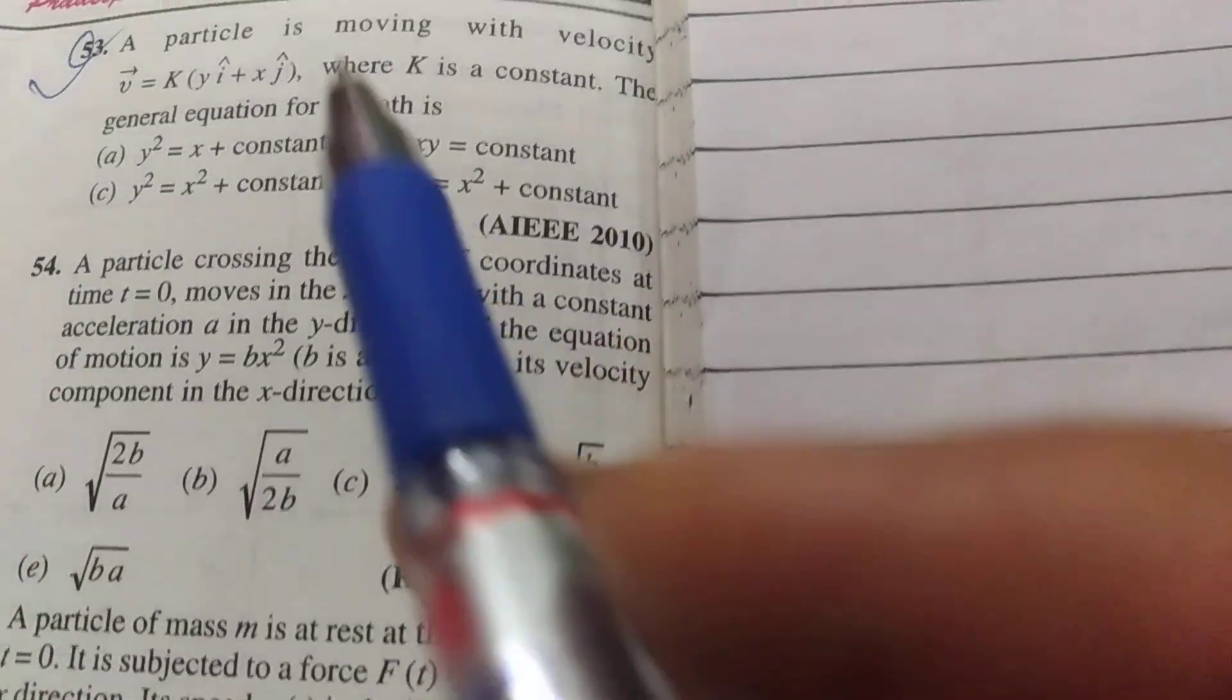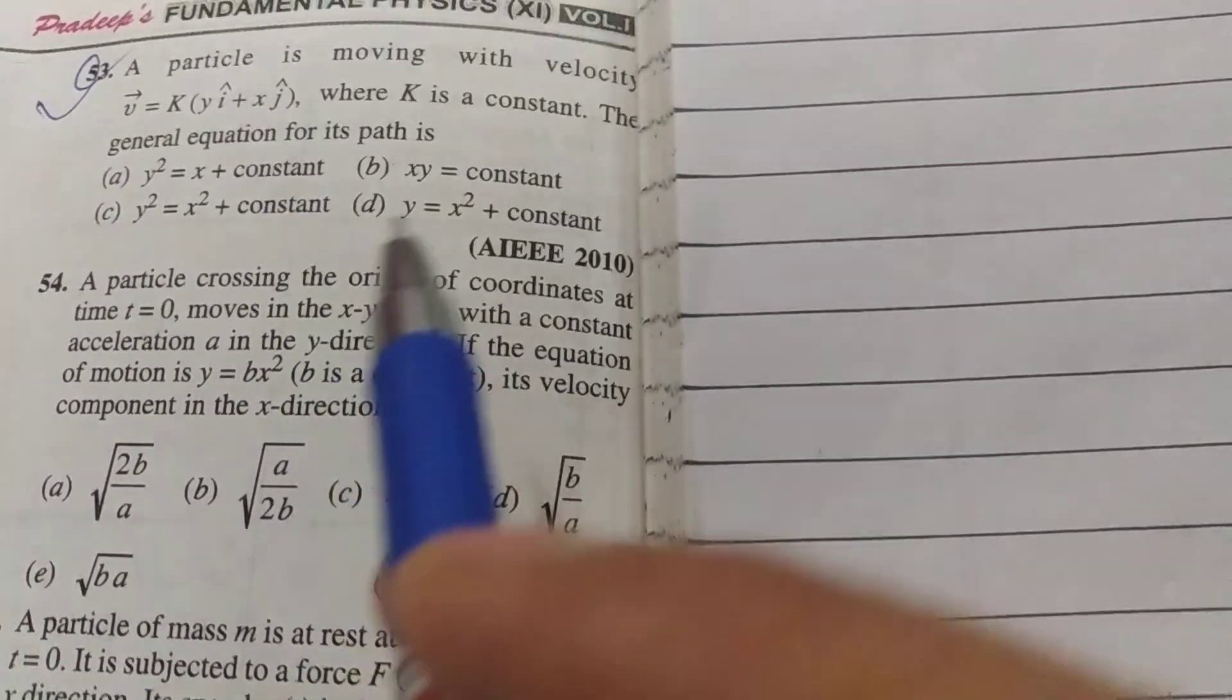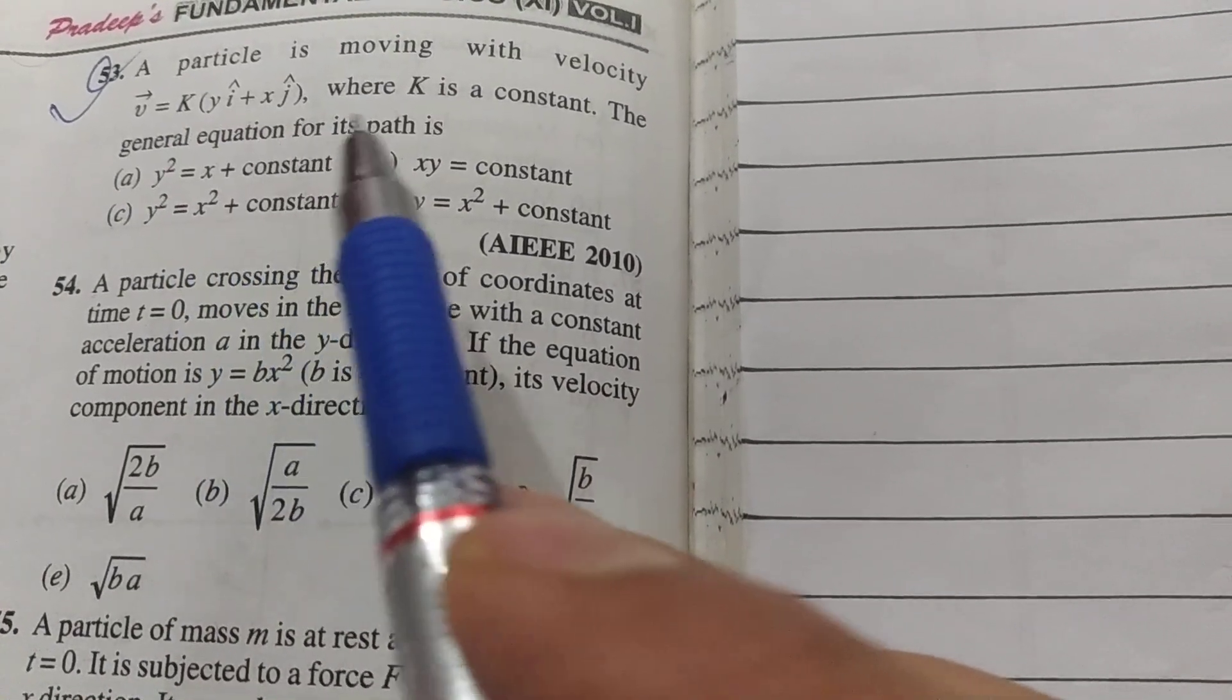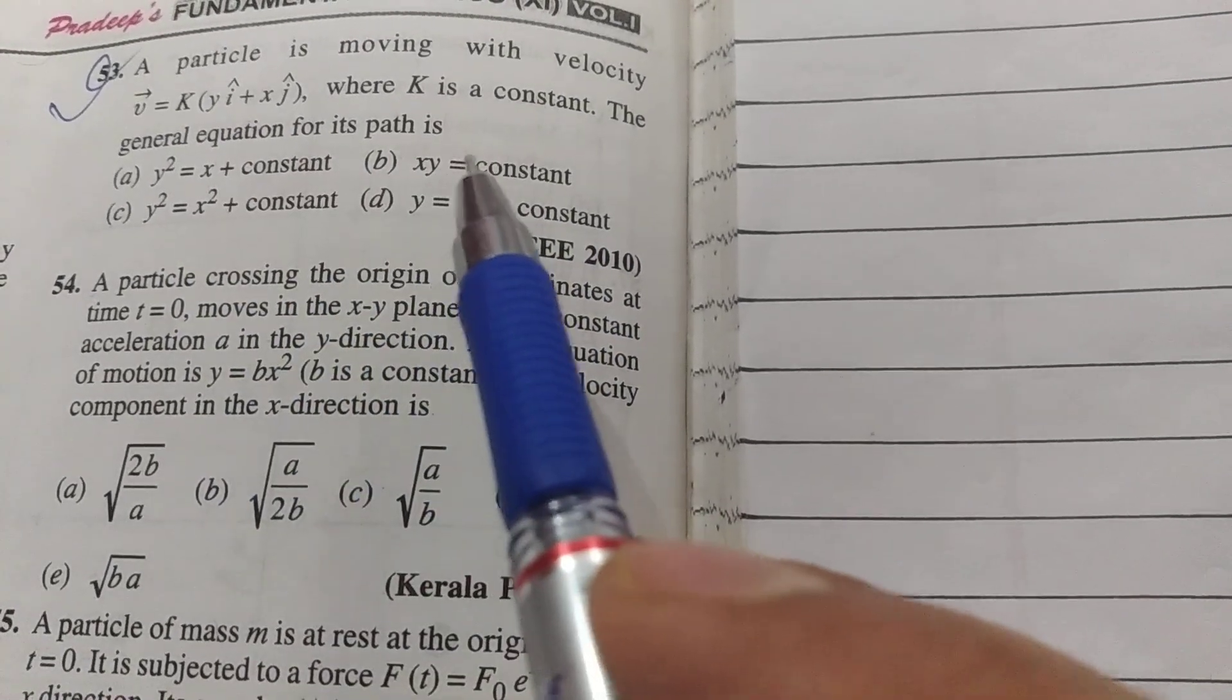Hello friends, good evening to all of you. I am going to discuss question number 53. A particle is moving with velocity k y i cap plus x j cap, where k is a constant. We need to find the general equation for its path.